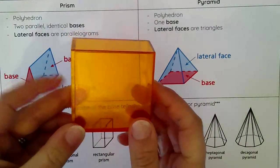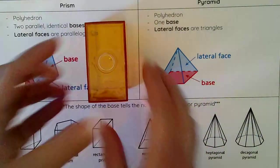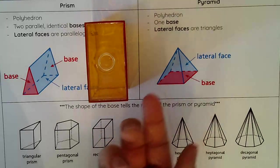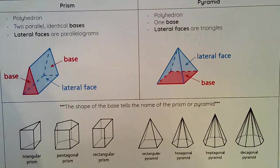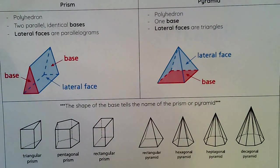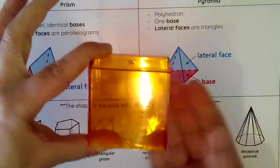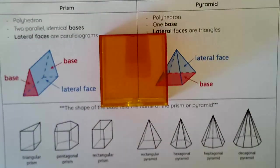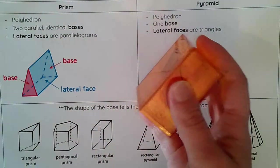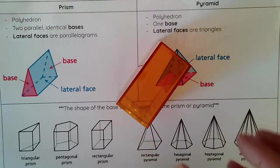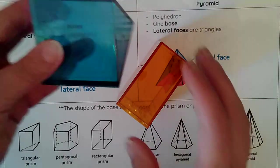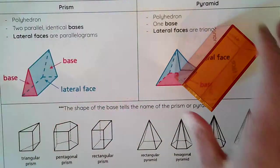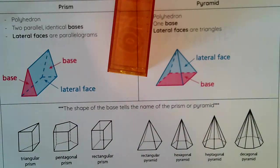Here is another type of prism. I can see that it has two bases, and when I look at the base I see that it is a rectangle. Because it has two bases it's a prism, and because it has rectangular bases this is a rectangular prism. Now, the rectangular prism is unique — you can reorient it so that different faces serve as the base, which is not possible with a triangular prism where the triangle must always be the base.